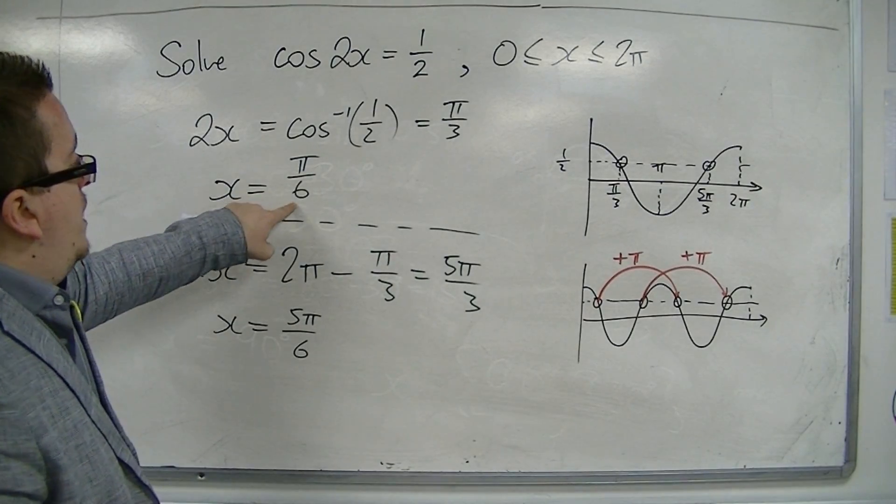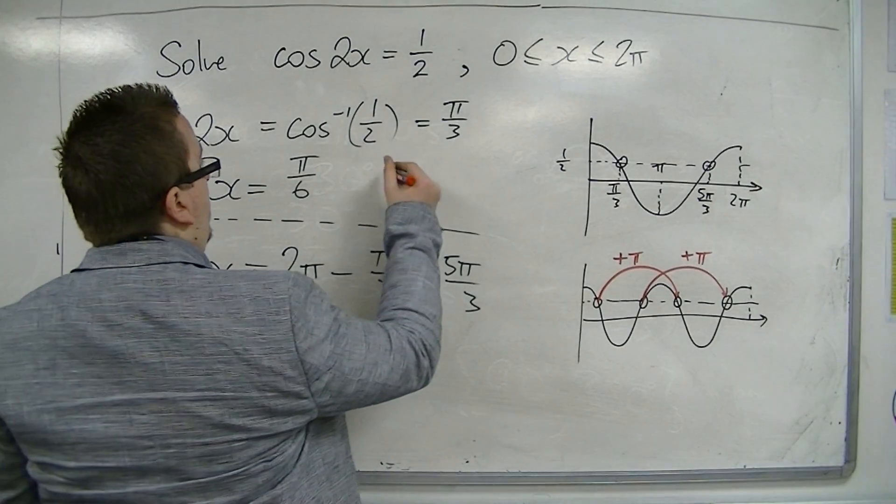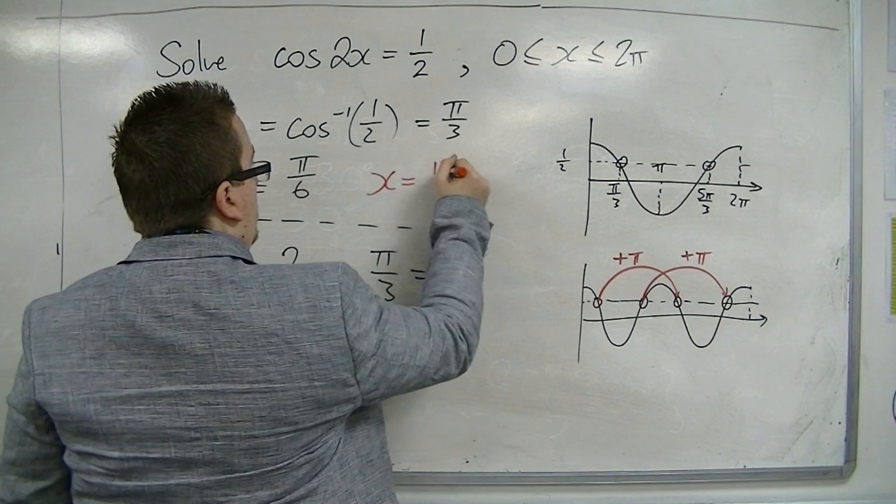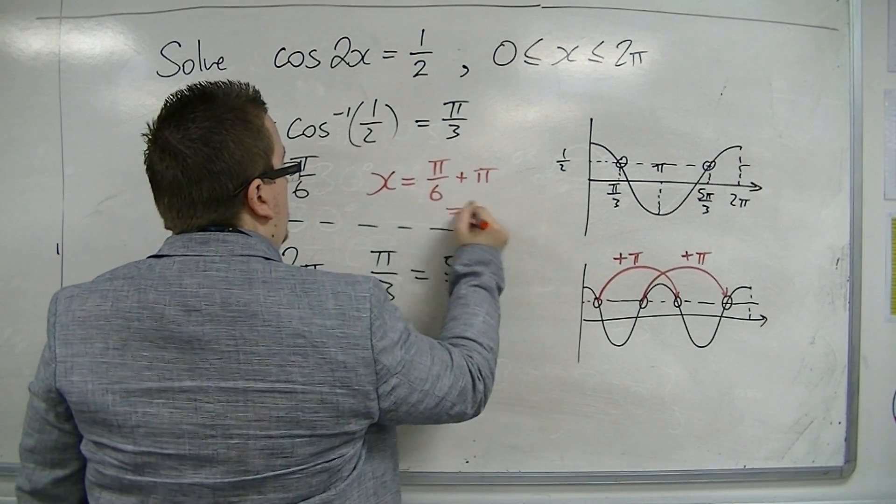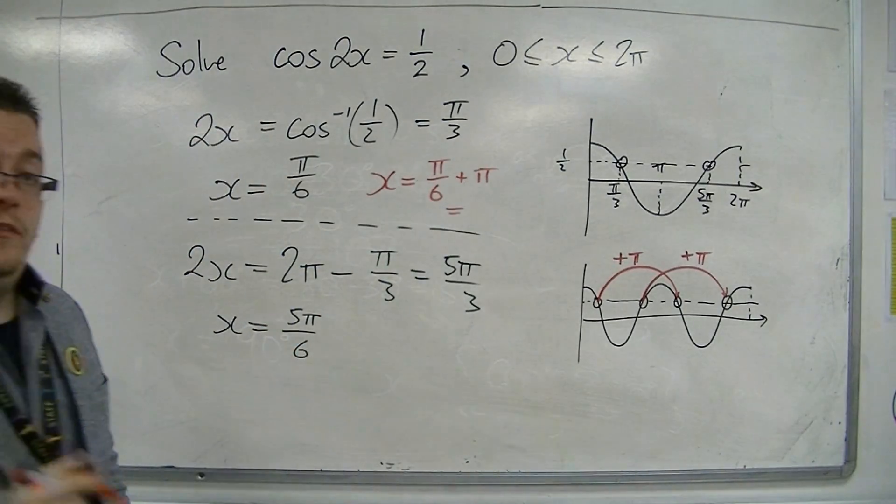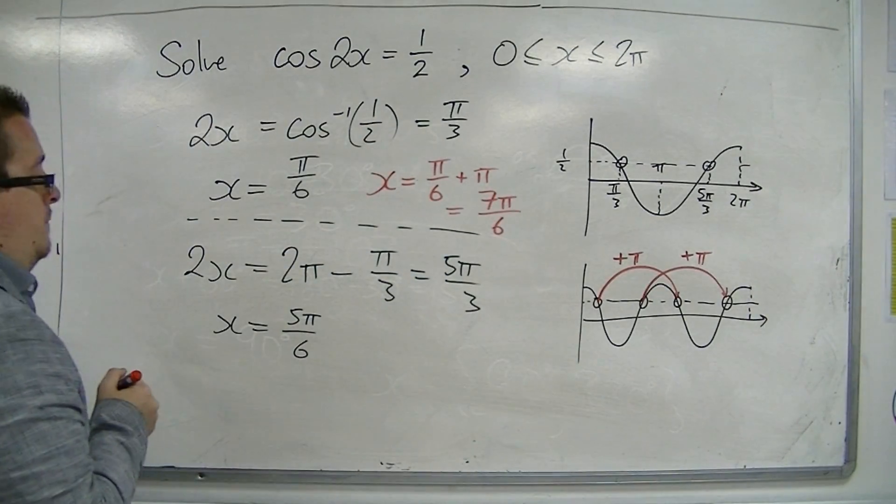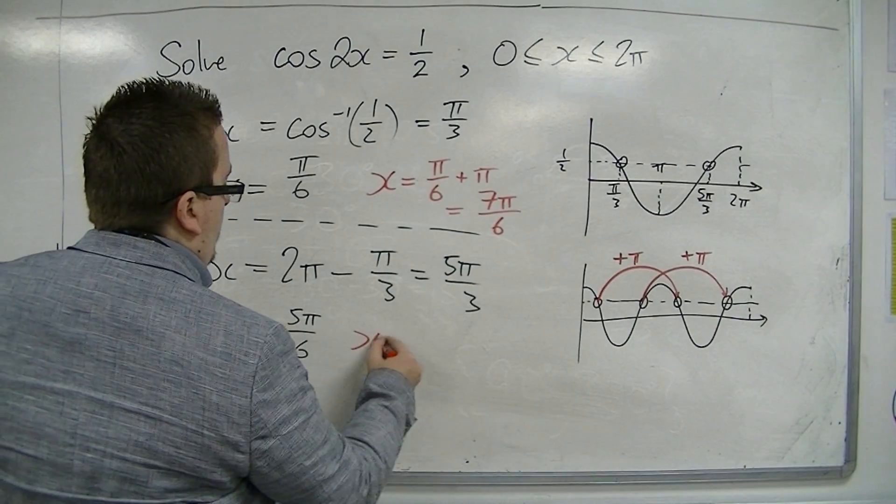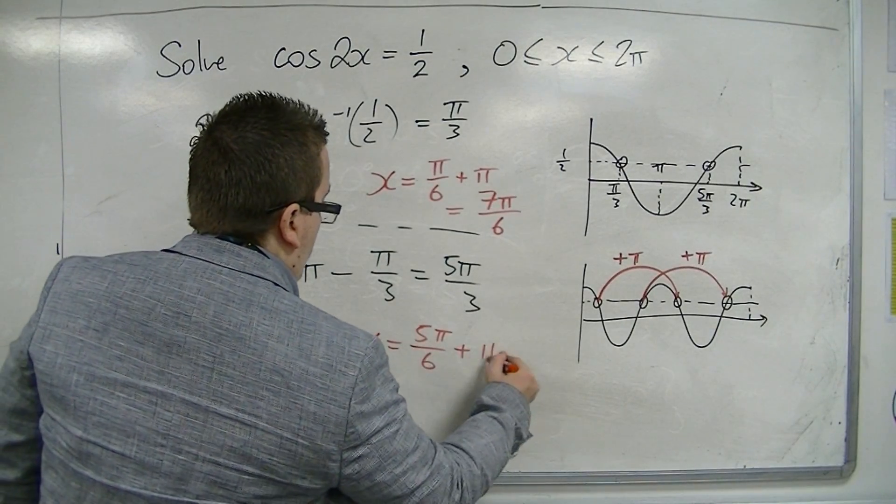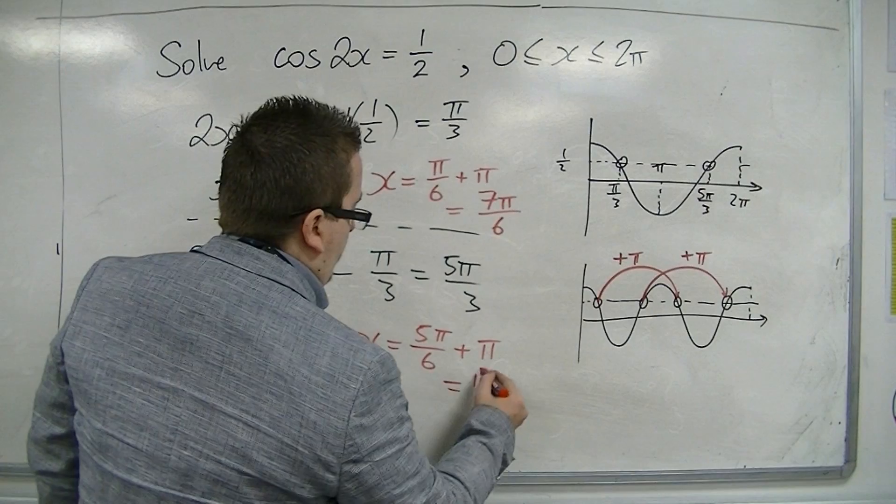So pi over 6 plus pi is 7 pi over 6, and 5 pi over 6 plus pi is 11 pi over 6.